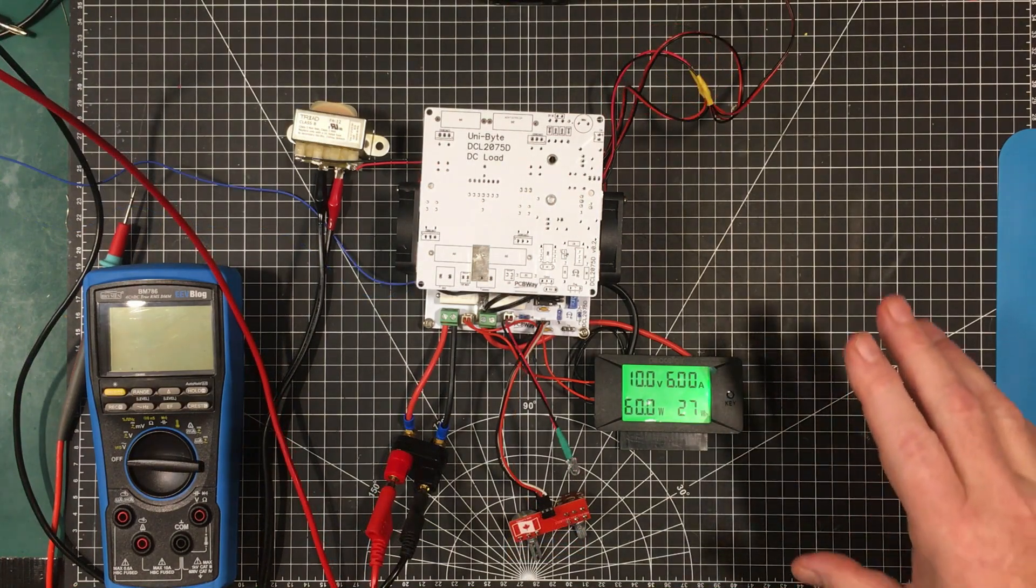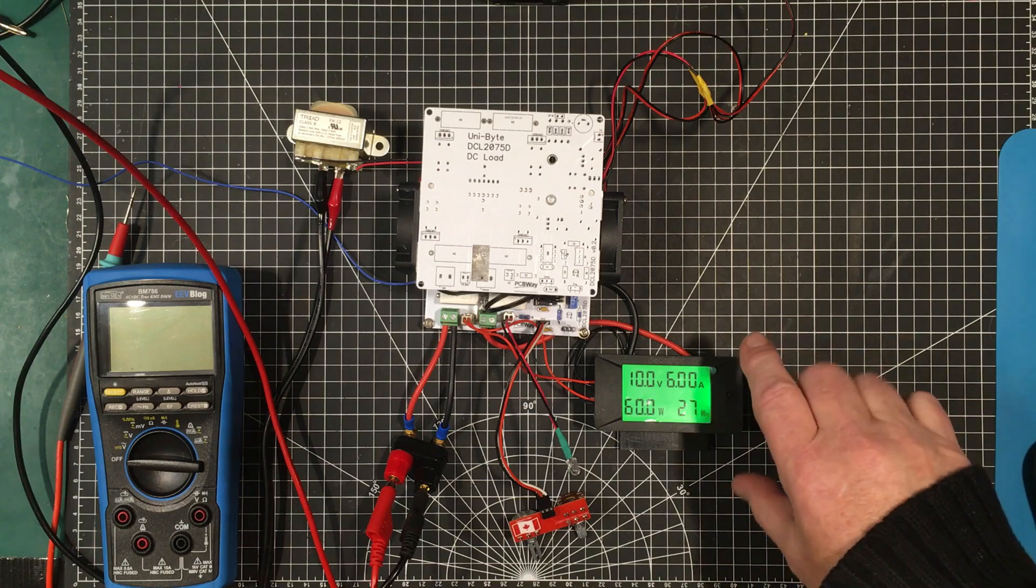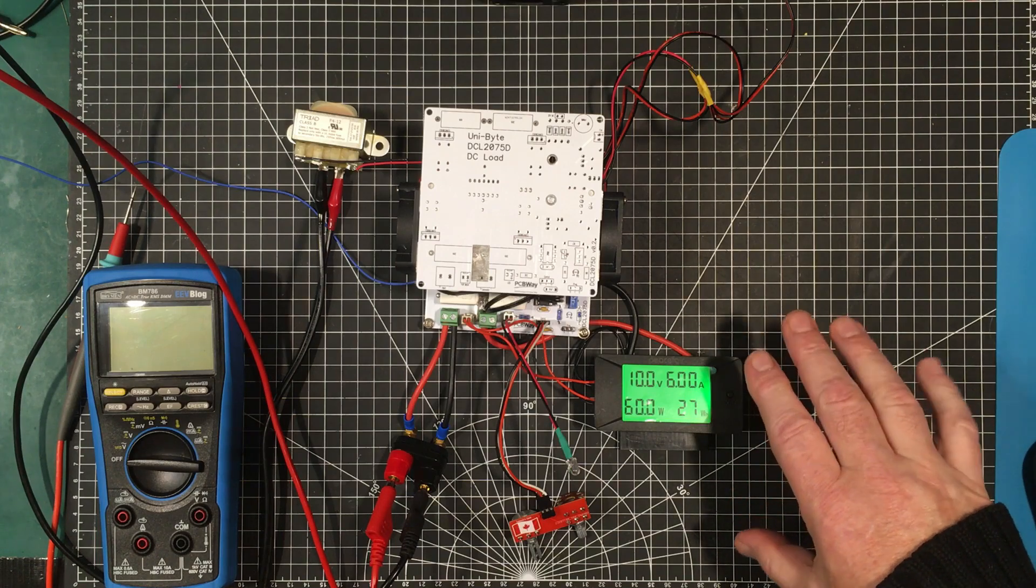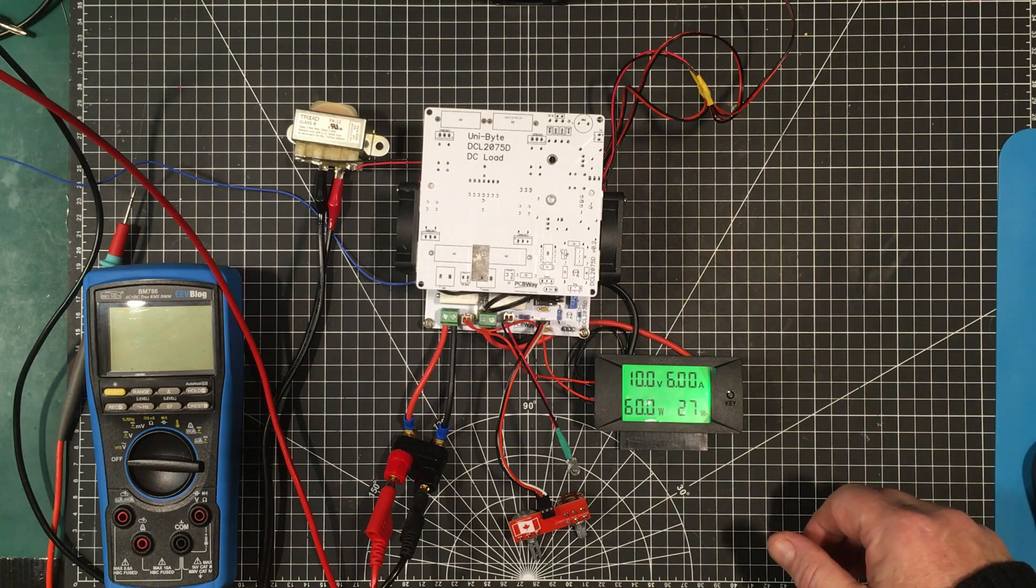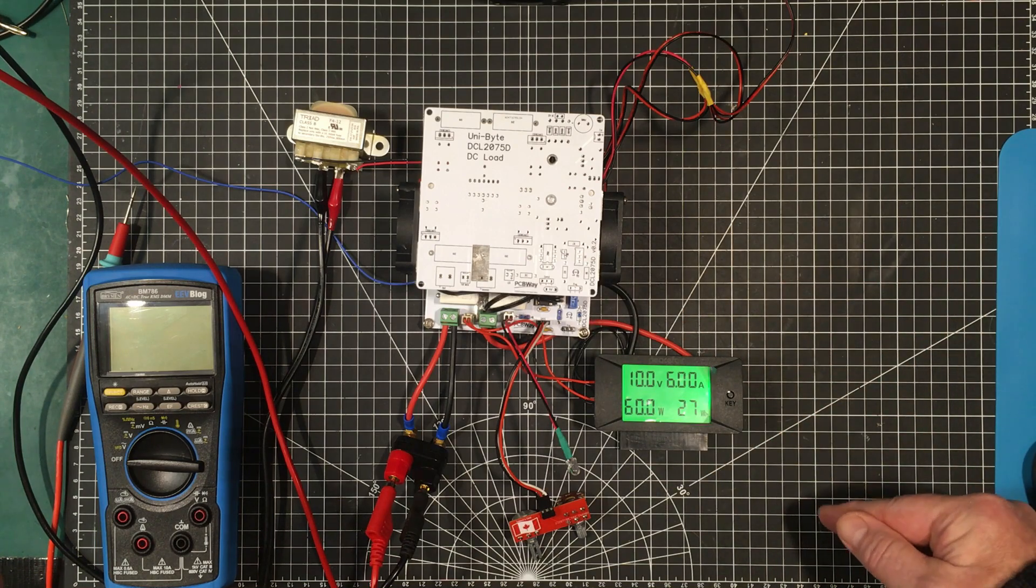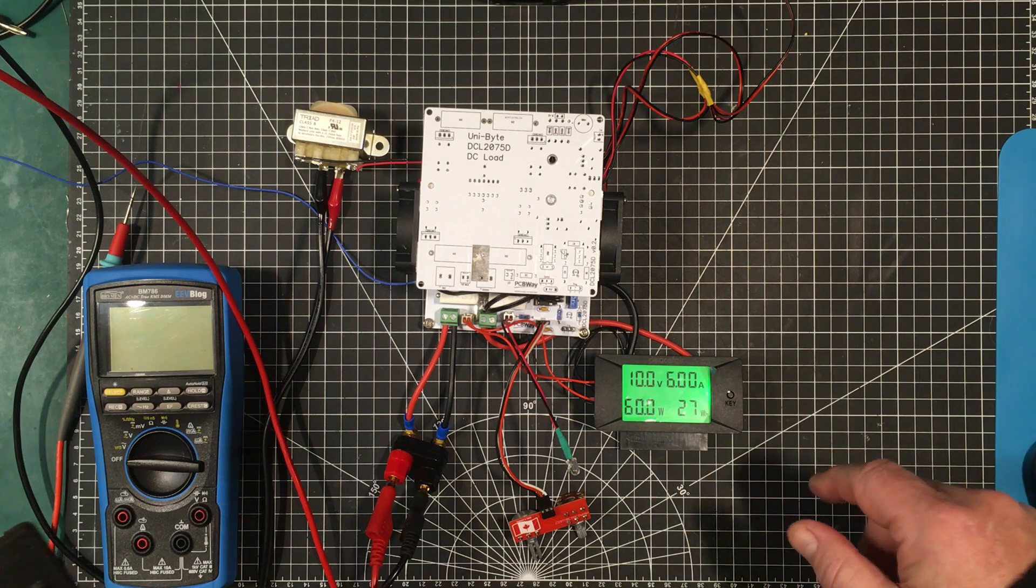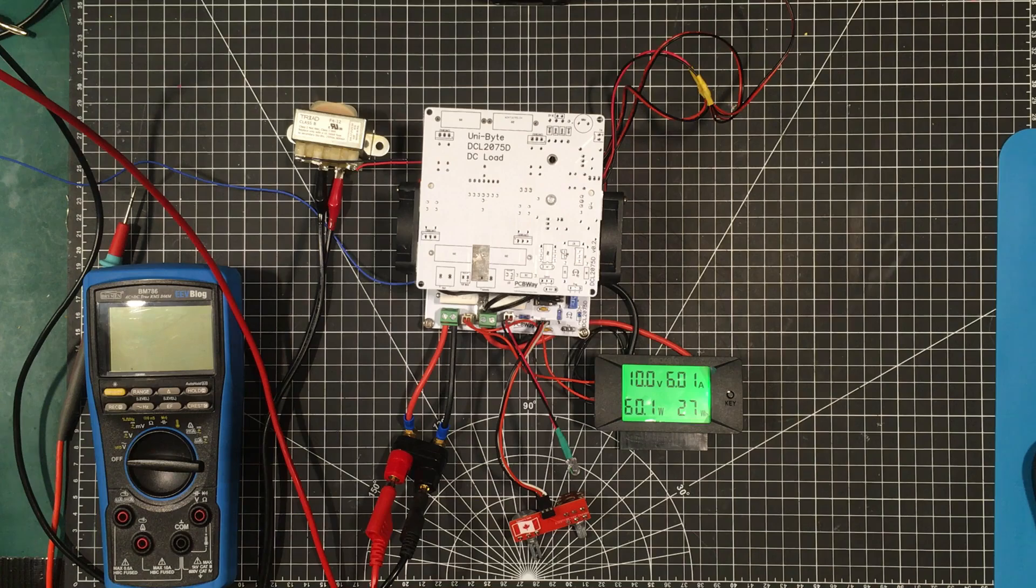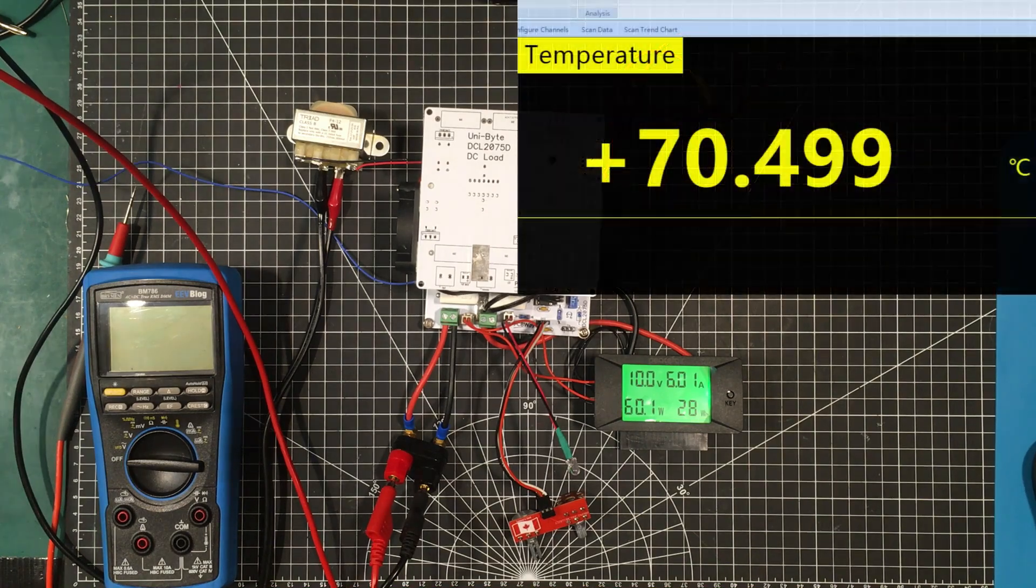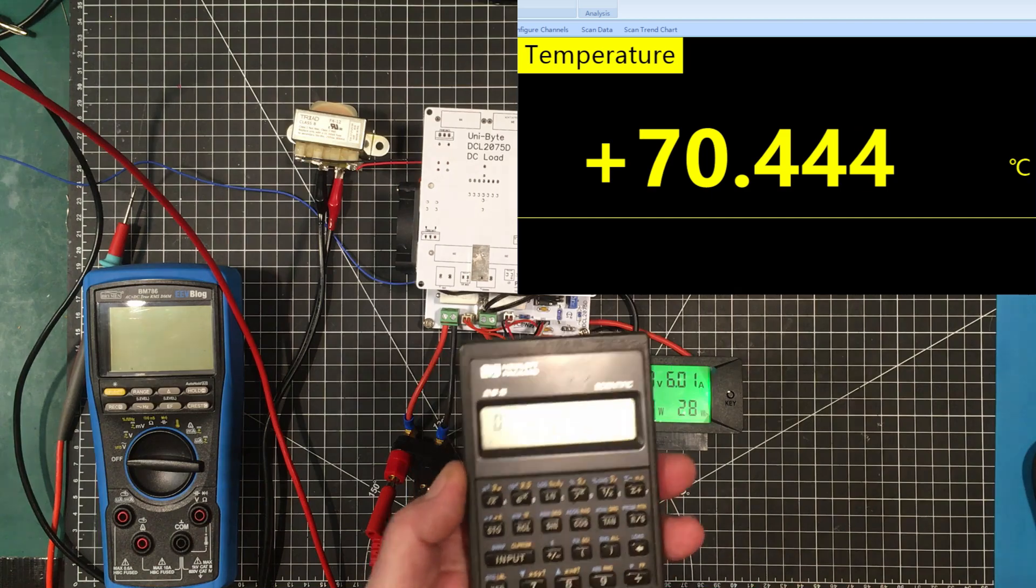The next phase is to start bringing up the wattage to see how far we can get with this. We need to make sure that the junction temperature doesn't rise above 175 degrees which is typical for silicon devices. Right now we're at 60 watts and we've got a temperature of around 71 degrees. Let me get that up on the screen. About 70.5 degrees at 60 watts, so let's do the math on that.